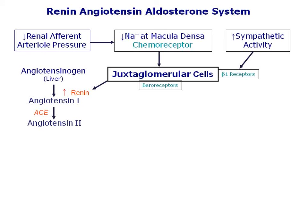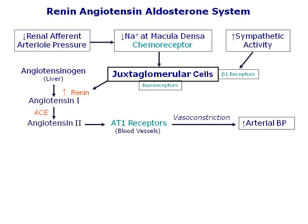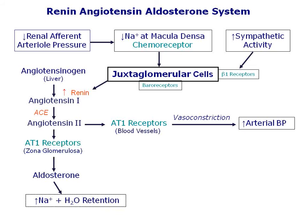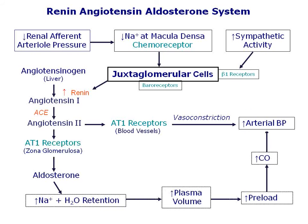Plasma angiotensin-2 has multiple actions on different vascular and organ systems that ultimately increase extracellular fluid volume and arterial blood pressure. It causes vasoconstriction of renal and systemic arterioles, which raises total peripheral resistance and blood pressure. It also increases secretion of aldosterone from the adrenal cortex, which promotes sodium and fluid reabsorption and excretion of potassium by the renal distal tubules to increase extracellular fluid volume. These actions of angiotensin-2 are mediated by angiotensin-1 receptors.